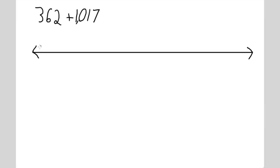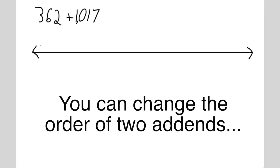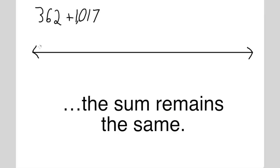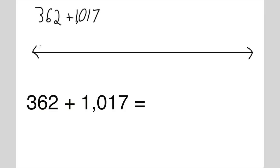The commutative property of addition states that when the order of two addends are changed, the sum remains the same. So that means 362 plus 1017 is 1017 plus 362.